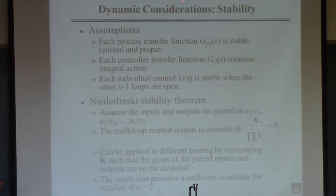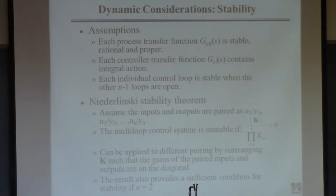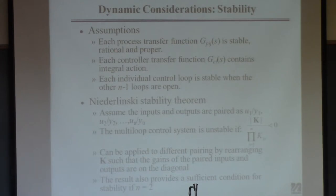The method requires some assumptions — this is true only if these conditions hold. First, each transfer function must be stable — no unstable systems allowed. Second, each must be proper, meaning the order of the denominator cannot be less than the order of the numerator. All process transfer functions satisfy this. And the last thing — it has to be rational, meaning it has to be the ratio of two polynomials, which means it cannot have a time delay.